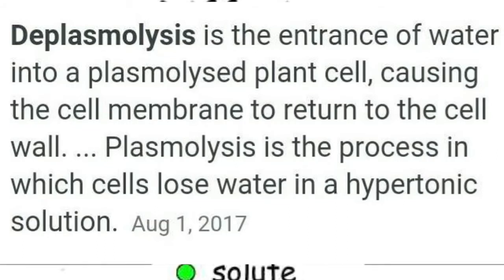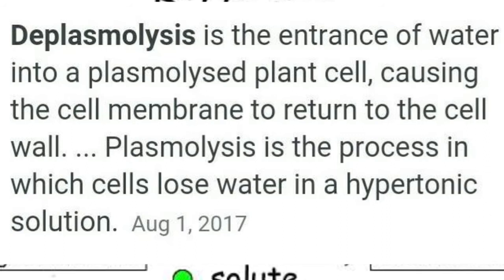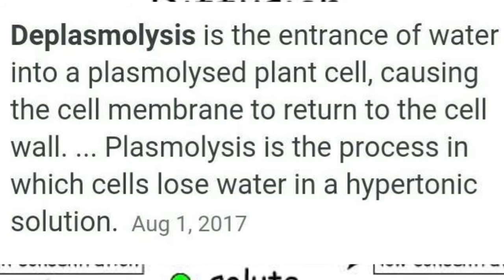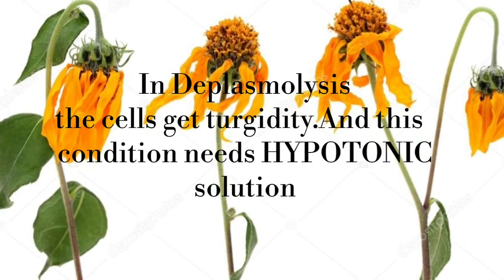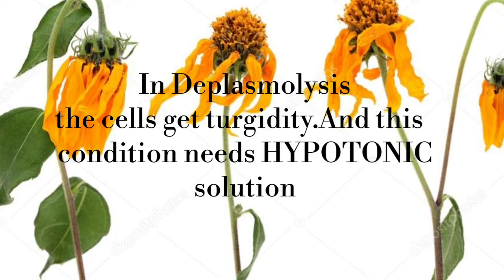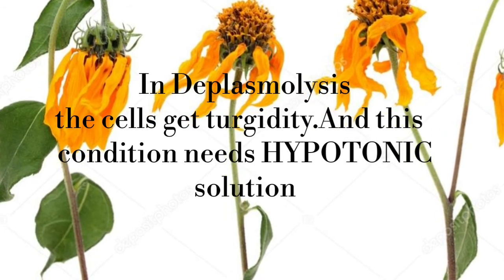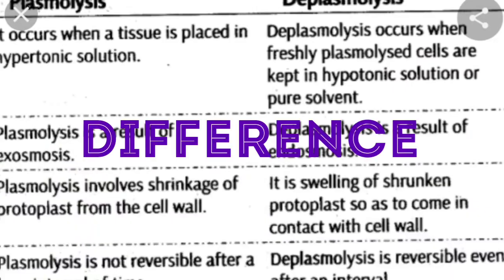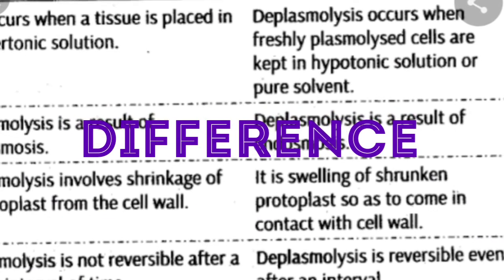Deplasmolysis is the entrance of water into a plasmolyzed plant cell, causing the cell membrane to return to the cell wall. In deplasmolysis, the cells regain turgidity, and this condition requires a hypotonic solution.